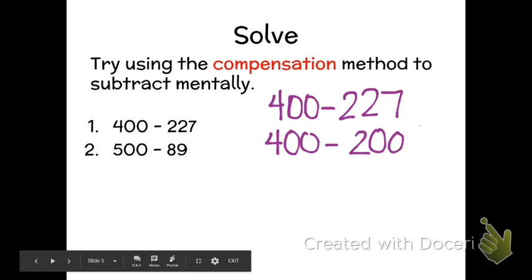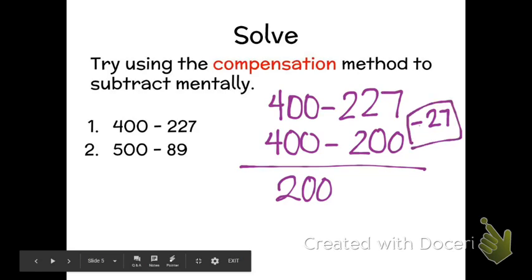Well when I look at 227 it's pretty close to 200, but this time I am subtracting 27 less than I need to. So when I do 400 minus 200, I end up with 200. But I didn't subtract enough this time because I did only 200 and I still need to subtract out 27.